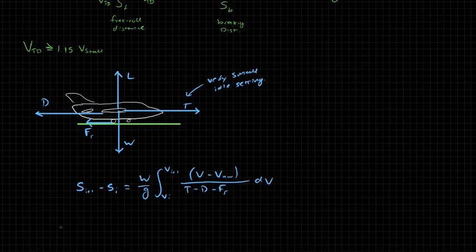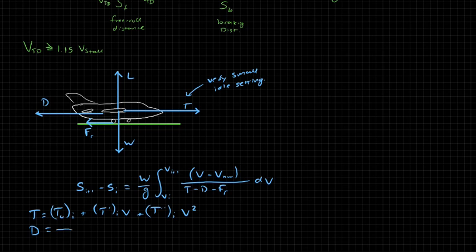So we can use the same equation and our same assumption that thrust is parabolic with velocity can also be used. And so just to recap, that's T naught i plus T prime i times V plus T double prime i V squared. So we can use that and we can also use the same equation for the drag, which includes ground effect, and our force of friction. So we've gone over this before. They're functions of V squared.